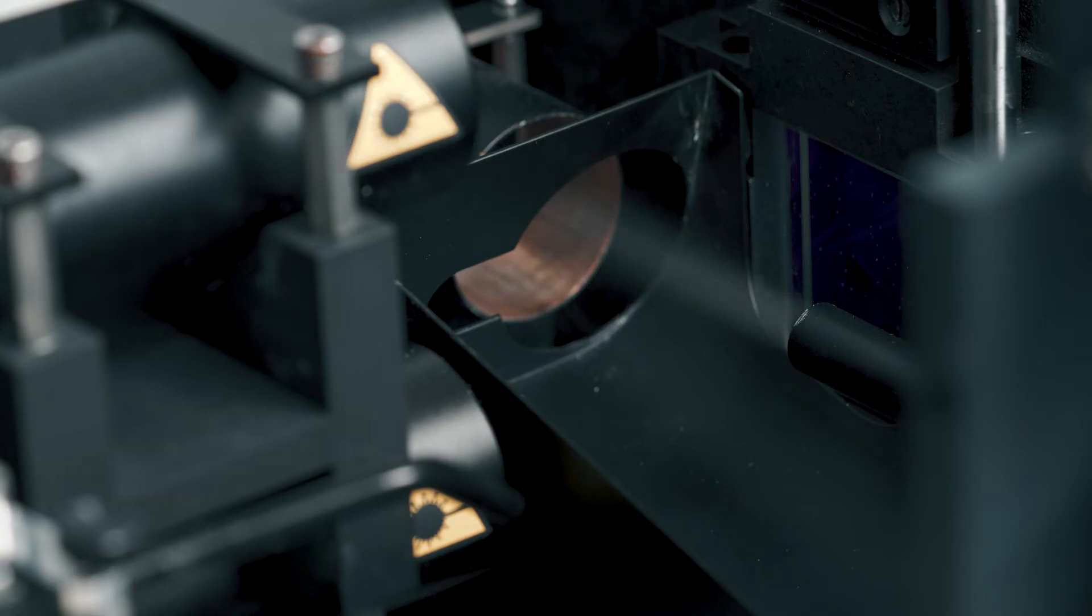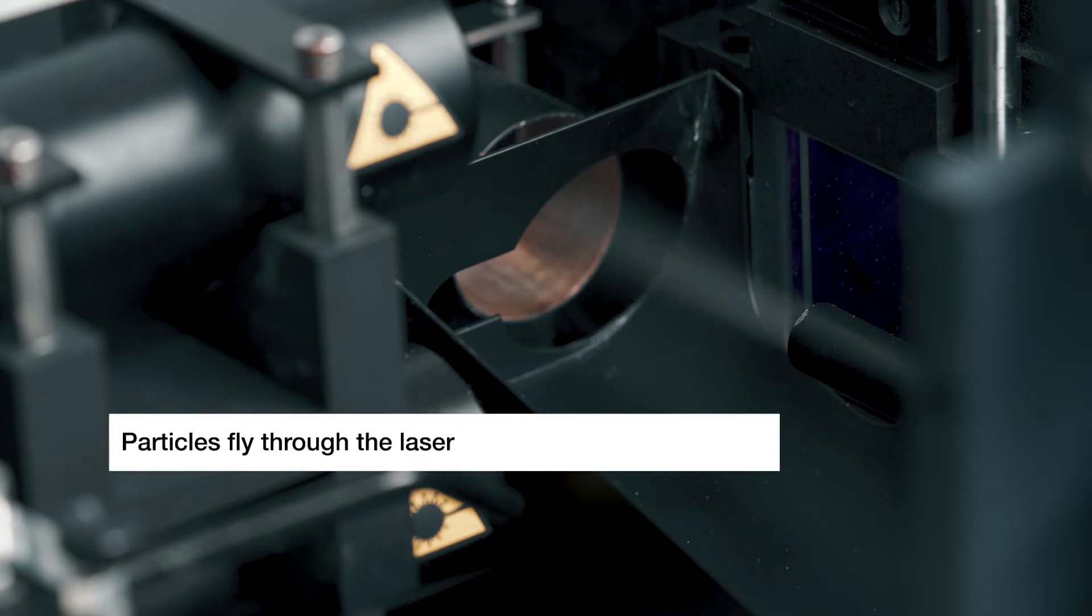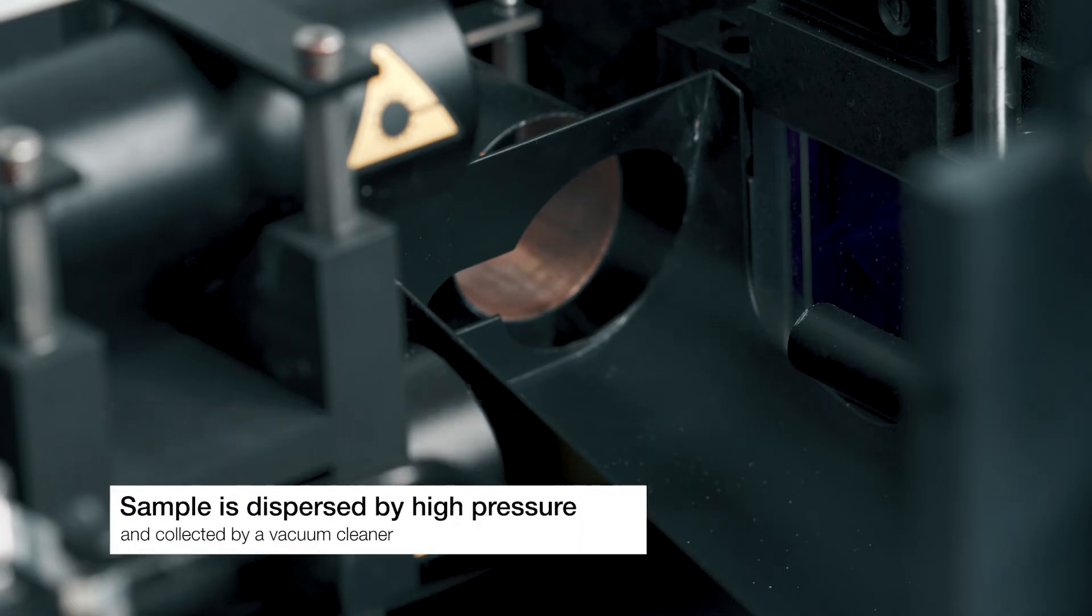In dry measurements, the sample particles fly through the laser beam. The samples are dispersed using compressed air and a venturi nozzle. After measurement, the samples are collected by a vacuum cleaner.